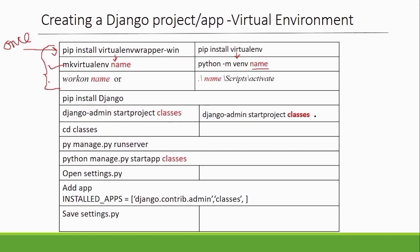The next step is to activate the virtual environment. The activation command depends on which method you used to install. Once activated, you will install Django within your virtual environment using the command: pip install Django. Whether you follow either approach, the command to install Django remains the same.